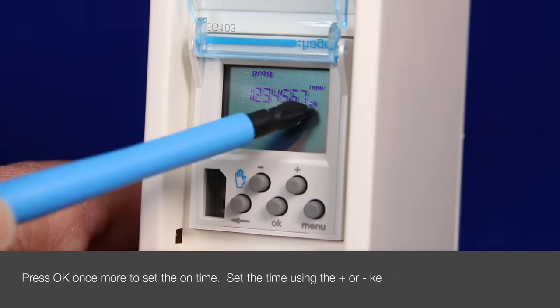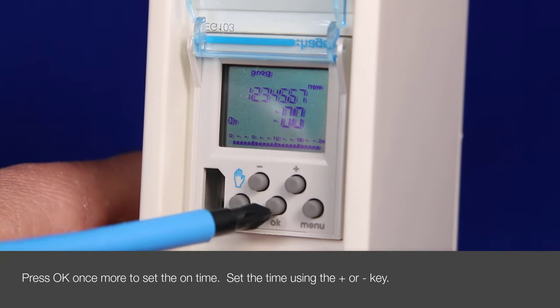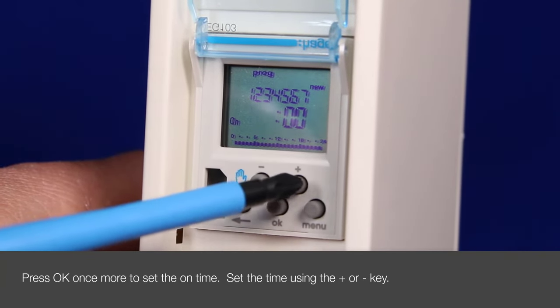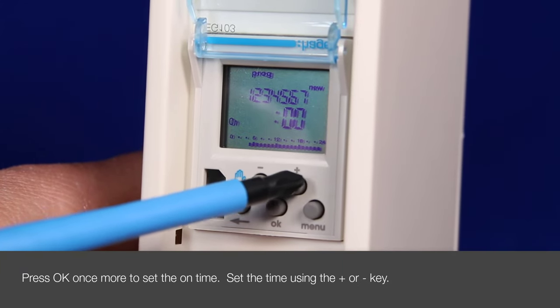After the last OK, the clock is asking for the on time. Again, we say OK. The time hours then starts flashing. We now press plus until 0900, 9am, starts flashing.